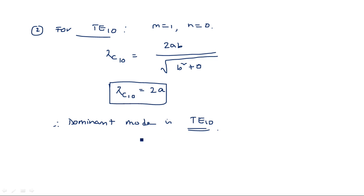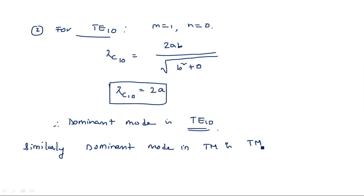Similarly, for TM modes, the dominant mode is TM11. The least possible modes TM10 and TM01 do not exist. TM11 is the least possible existing TM mode. All modes above TM11 exist, but TM11 has the highest cutoff wavelength among TM modes, so it is considered the dominant TM mode.